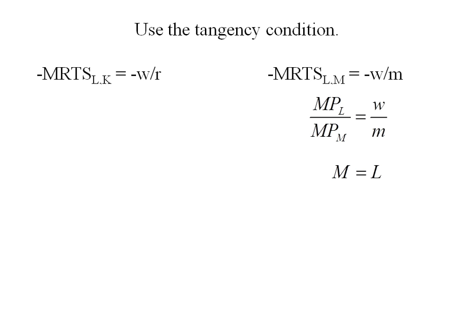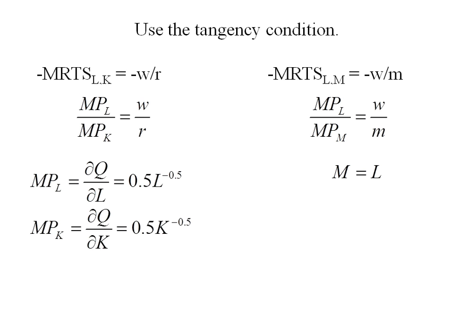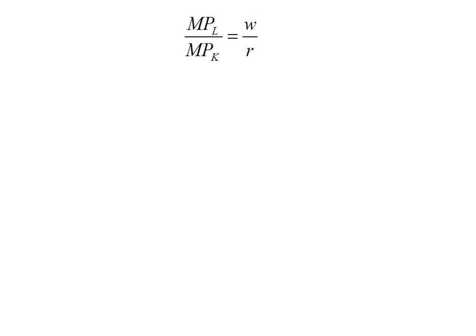We already solved that through. We know it's going to be M equals L. We will work through the left hand side, the marginal product of labor over the marginal product of capital. I'll take those partial derivatives and plug in. So K over L is 1, or K equals L.